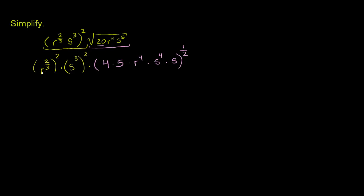Now let's simplify this even more. If we're taking something to the 2/3 power and then to the 2nd power, we can just multiply the exponents. So this term right here we can simplify as r to the 4/3 power. Taking something to the 4/3 power — you can view it as finding its cube root and then taking that to the 4th power, or taking it to the 4th power and then finding the cube root. So you have r to the 4/3 times s to the 3 times 2, which is s to the 6th power.